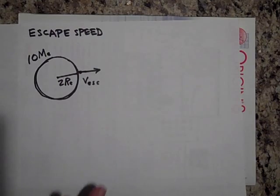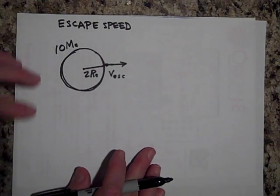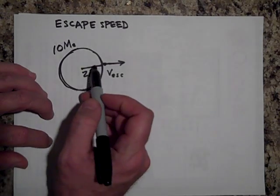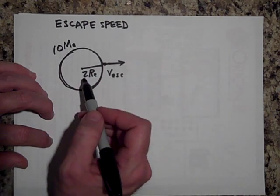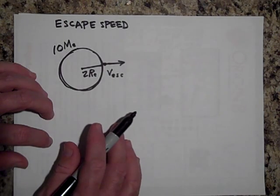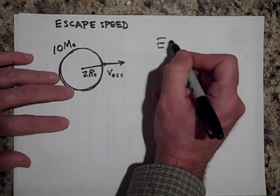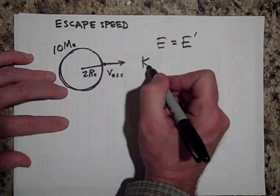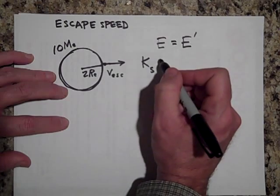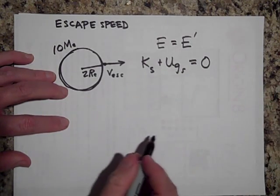Last problem: derive the escape velocity for a planet that is twice the mass of the Earth and twice the radius of the Earth. You set up energy conservation: E = E′. Kinetic energy at the surface plus gravitational potential energy at the surface must equal zero in order for the object to just barely escape.